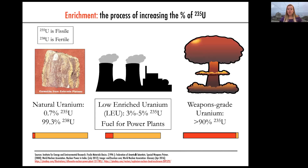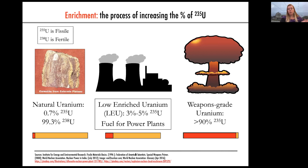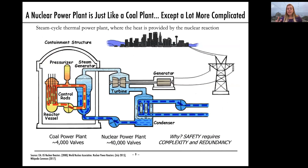This enrichment level is not weapons-grade. Weapons-grade uranium — what you'd use in a bomb — requires enrichment to over 90%. When auditors look at countries to determine whether they're doing peaceful enrichment or weapons-grade enrichment, they're looking for this difference: are they enriching to low-enriched uranium, or going all the way to weapons-grade uranium?